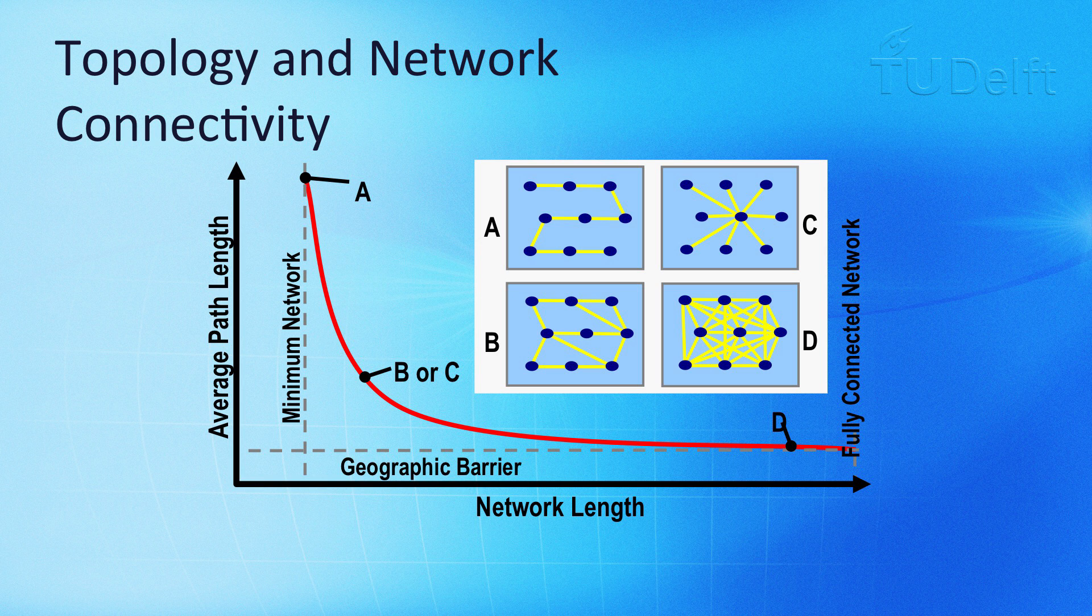How we add edges can affect network metrics, or measures that we have to quantify various properties of these networks. In A through D, we can see four different types of networks that consist of the nodes in the same exact positions. What you see in the plot is that we are trying to get an idea of the relationship between the average path length versus the network length.